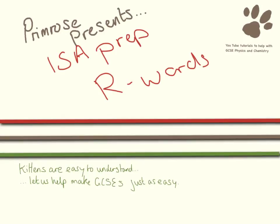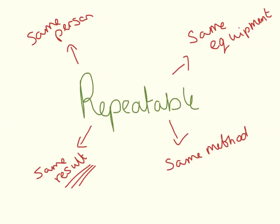Hello and welcome to this video where we're going to be looking at some really important words for your ISO preparation. The first one is repeatable. If you are doing an experiment, the same person, same equipment, same method — can you get the same results every single time? If you can, this means the experiment is repeatable.